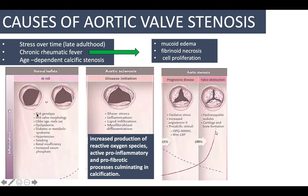As the disease initiates, it is caused by shear stress and inflammatory processes. Inflammatory processes due to bacterial infection — such as endocarditis or rheumatic fever — cause inflammation of the valves. Inflammation leads to increased blood flow, fibrotic changes, and lipid infiltration due to hyperlipidemia, as well as myofibroblast differentiation. This inflammation causes increased production of reactive oxygen species and activates pro-inflammatory and pro-fibrotic processes, ultimately leading to calcification.